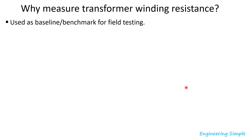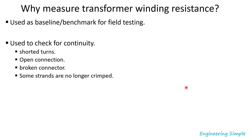Winding resistance measurement is very important. First, winding resistance can be used as a baseline or benchmark for field testing. Before the transformer leaves the factory, the winding resistance is tested. Then in the field, before commissioning or putting the transformer in service, resistance can be measured and factory results used as a baseline to know if the measurements look right.